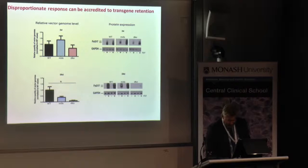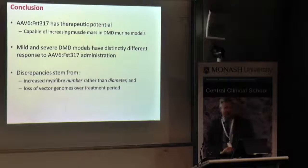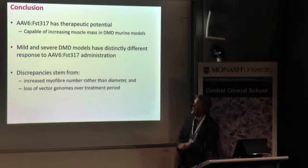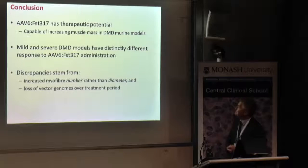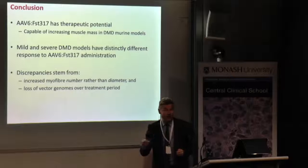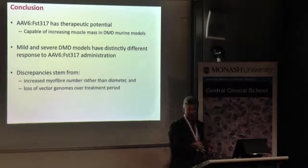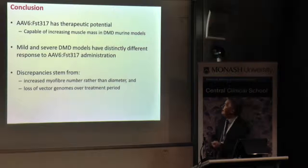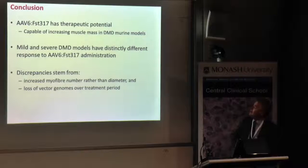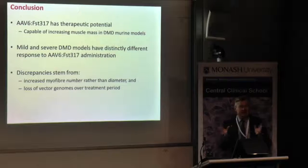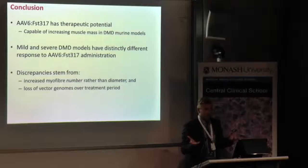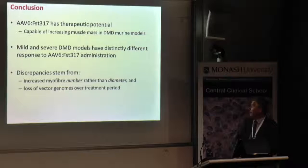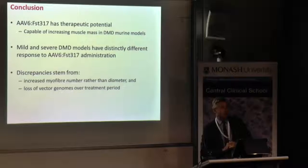So, the conclusions are clearly that the AAV vector has great therapeutic potential. Think of that left leg on the wild-type mouse — think of that on a half-forward flank. I'm fairly sure that the Essendon Football Club have organised this to be introduced into their pre-seasonal program for next year with the two players that are available to play for them. We have mild and severe models of Duchenne muscular dystrophy, and they have a distinctly different response, as shown by that lovely pale blue graph and the pink one next to it. The discrepancies stem from the obvious — loss of vector genomes over the treatment period. I'd love to say I'd be happy to take questions, but that would be an absolute frank lie. Thank you so much.